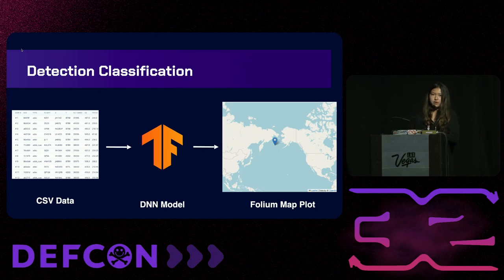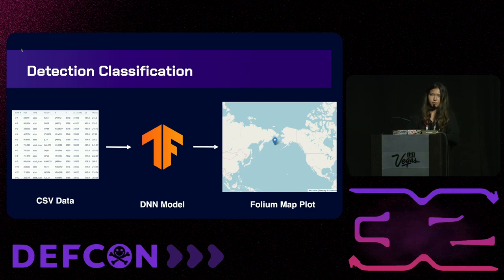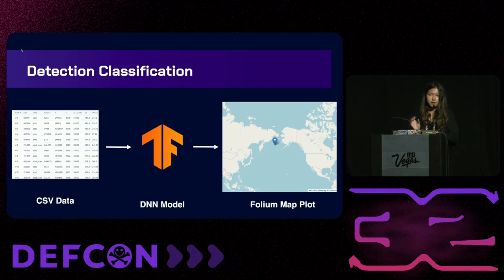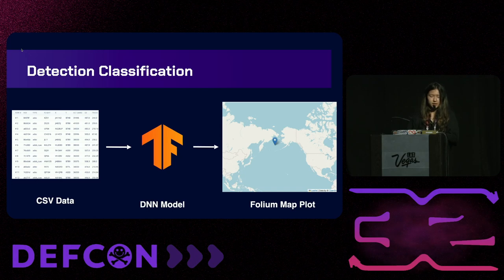Once I collected and tabulated this data in CSV format, I fed it into the deep neural network model I created using TensorFlow. To get a visual plot of the classification, once a spoofed aircraft was classified I used a library called Folium to make a visual plot of the spoofed airplanes.